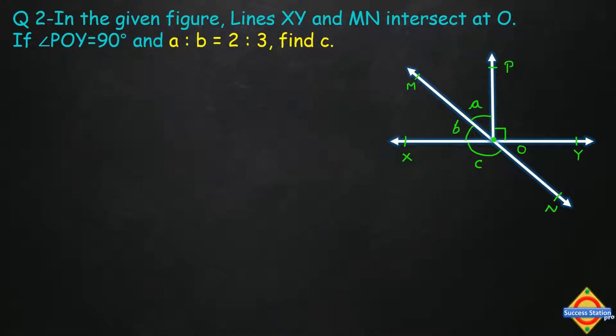Let's move towards question number 2. In the given figure, lines XY and MN intersect at point O. This line is XY and this is MN line. They intersect at point O. Angle POY is equal to 90 degrees, and the ratio of angles A and B is given as 2:3. We have to find angle C. Given: angle POY = 90° and a:b = 2:3. To find: angle C value.